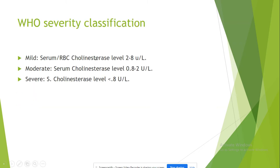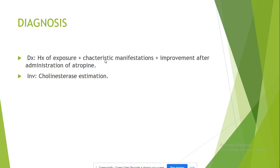The WHO has a severity classification based on the level of acetylcholinesterase activity in the serum and also the RBC. For diagnosis, we take a history of exposure — which is commonly a farmer presenting with the typical DUMBBELLS — and we administer atropine; if the patient has immediate improvement, that's how we diagnose in the ED. You can also do a cholinesterase estimation, but this test is rare in our setting.